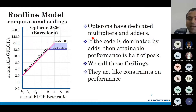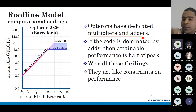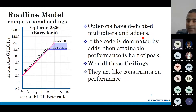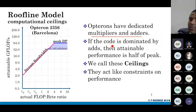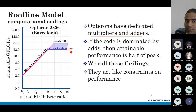Opterons have dedicated multipliers and adders. Sometimes we have FMA units which can do fused multiply-add, but this Opteron has separate multipliers and adders. Suppose your application only needs adders — it doesn't need multipliers. Then even though you have multiplier hardware, you can't use it. Assuming equal numbers of adders and multipliers and we are not using multipliers, the maximum performance we can get is just half. On this logarithmic axis, you go one cell down — we call these ceilings, they act like constraints on performance.